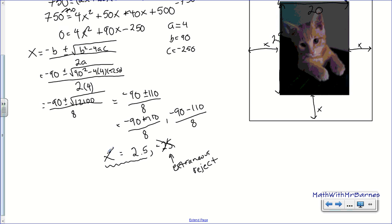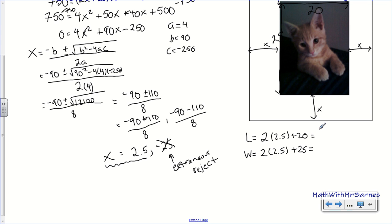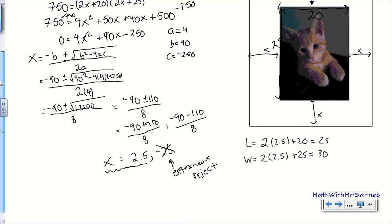So when we're talking about width, we're going to call that an extraneous solution. So we're going to reject it. So that means that my width is 2.5. So that's my x value right there. So that's the width of the frame. Now, if I want to find the actual dimensions, like the width of the entire photograph, what I do is take my 2.5 and sub it back into my two initial equations that I found. And I just do that right now. And I just work those out. 2 times 2.5 plus 20, 25, and then 30. Alright, there it is, guys.